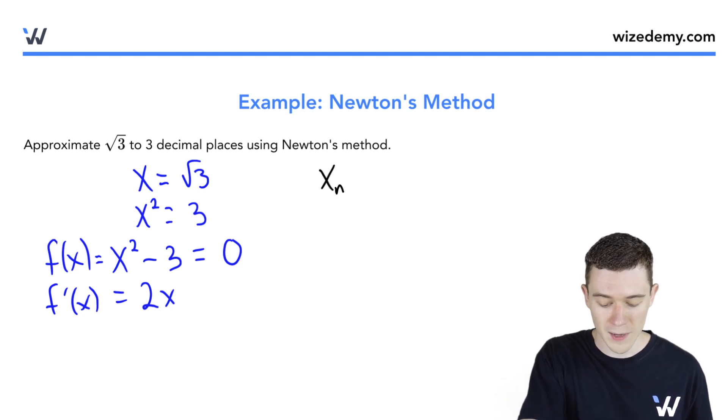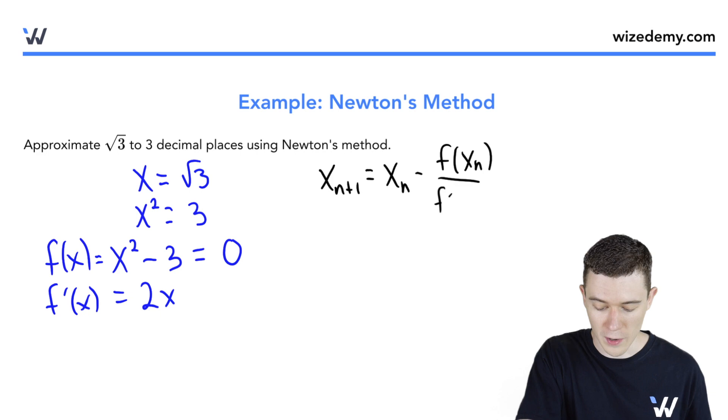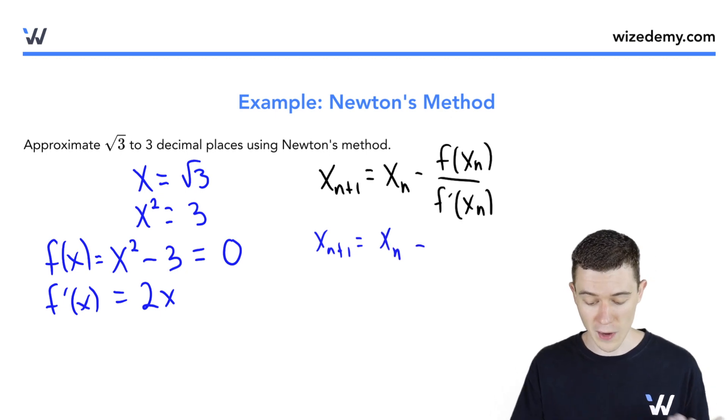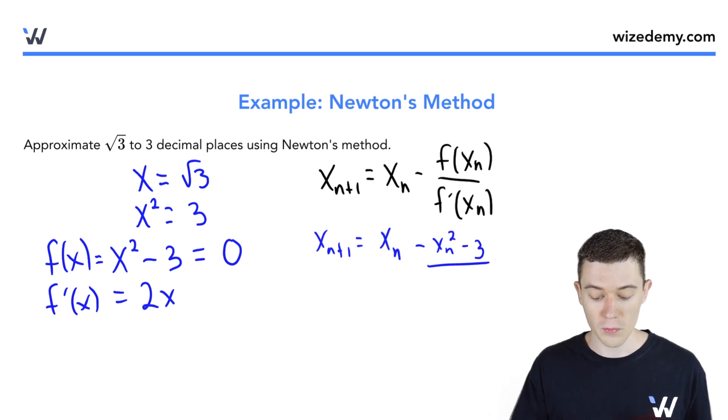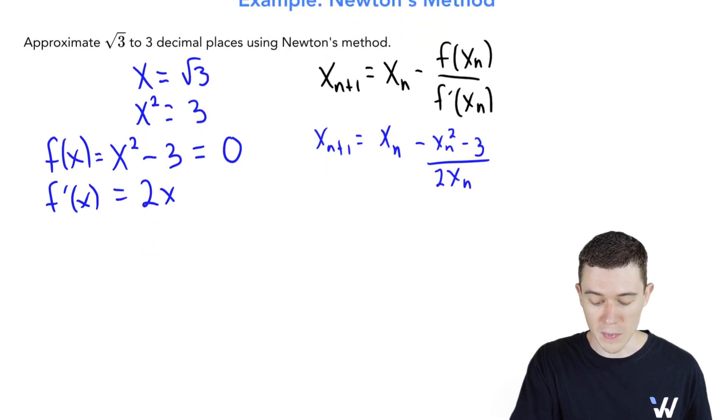I'll remind you Newton's method is x sub n plus one equals x sub n minus f of x sub n over f prime of x sub n. Or in our case, x sub n plus one equals x sub n minus our function evaluated at x sub n. Our function is x squared minus 3 over the derivative, which is just 2x. So we have our Newton's method equation.